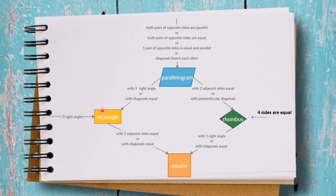You can imagine how a rectangle may become a square. A rectangle is elongated with right angles — if two adjacent sides become equal, it becomes a square. Or if the diagonals become perpendicular, it becomes a square. So if you are asked to prove something is a square directly, you can go: parallelogram → rhombus → square, or parallelogram → rectangle → square.